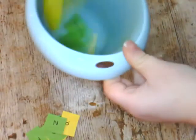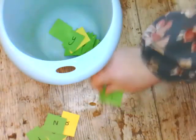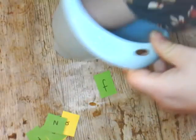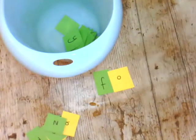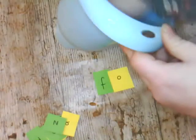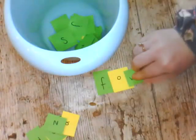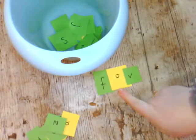Okay, silly soup, silly soup. What have I got in the silly soup? Green letter. A yellow letter. And a green letter. S, o, v.